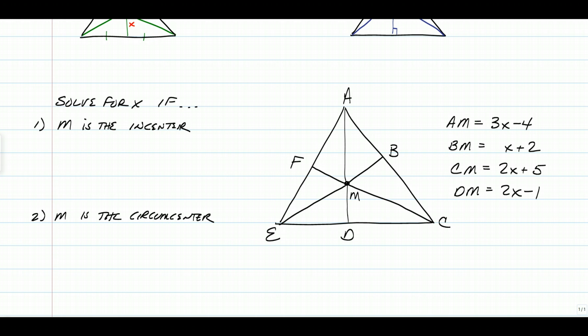So an incenter is the point that is equidistant from all sides of the triangle. So those are our three congruent pieces if M is an incenter.